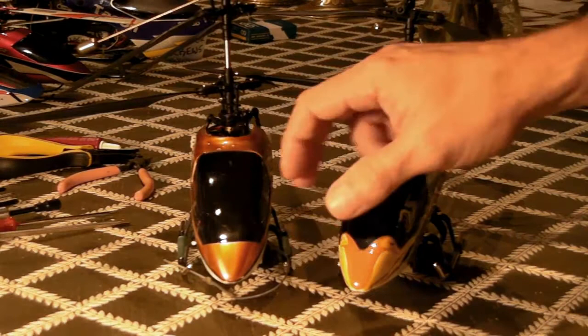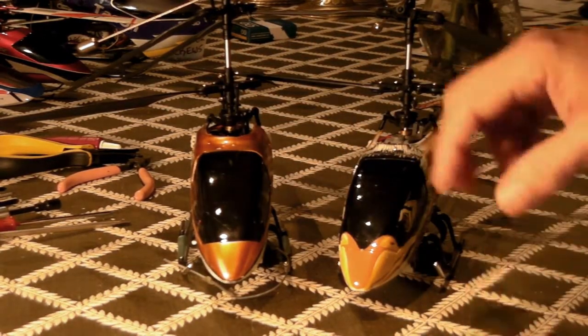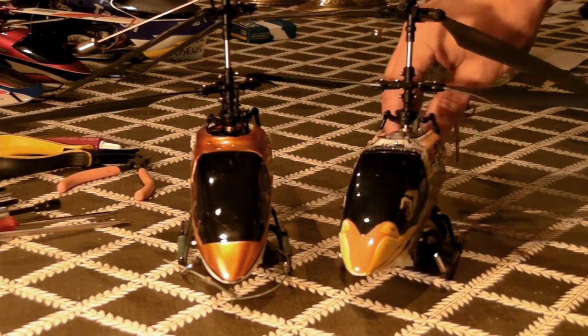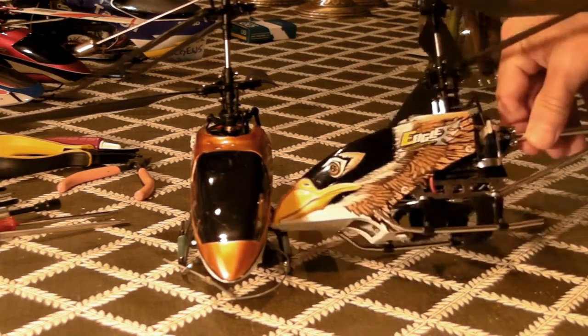And here's the 9051 Super 3D canopy right next to his brother, the Eagle canopy, which I think is kind of cool with the Eagle on it. Nice graphics.